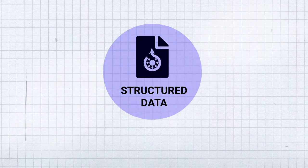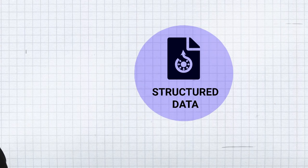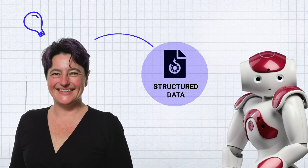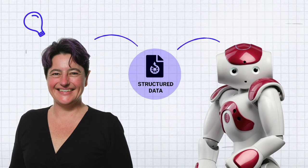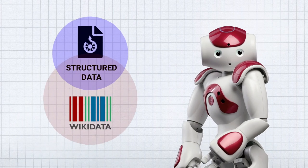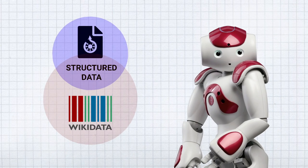Structured data is information about a file that is easy to understand by humans, but is also machine readable — easy to understand and process by computers. This is where Wikidata comes into play, Wikimedia's free knowledge base.